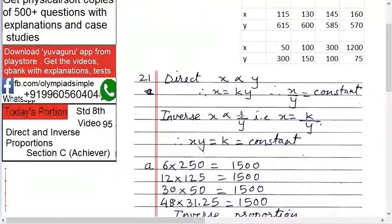X is inversely proportional to Y. This is the sign of inverse proportion. So X equals K upon Y, therefore X times Y equals K. It means if you want inverse proportion, then X into Y should be constant.